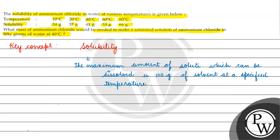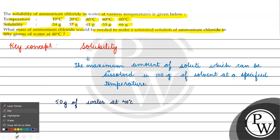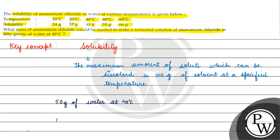We are asked about 50 grams of water at 40°C. What we are given is the solubility of ammonium chloride in 100 grams of water at 40°C, and that solubility value is 41 grams.